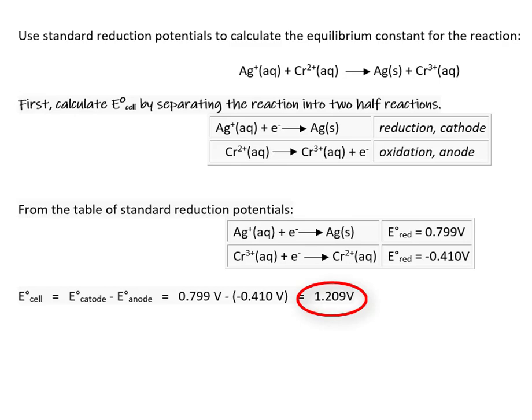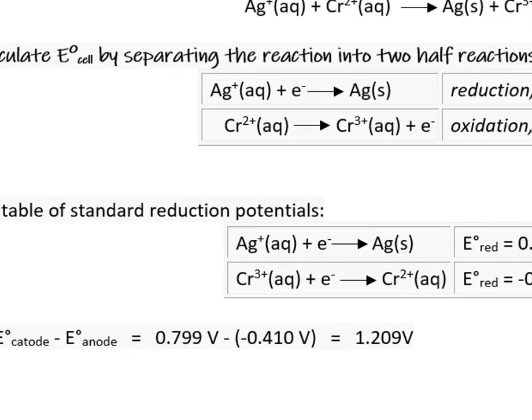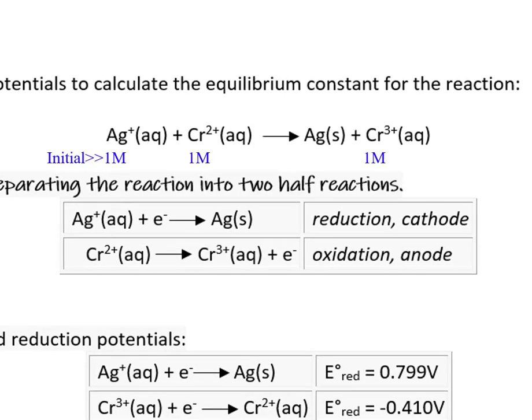This implies the reaction is highly product-favored and we would expect a reasonably large equilibrium constant. E°cell under standard conditions means the reaction starts with one molar concentration of the solute ions, then proceeds in a direction to attain equilibrium.